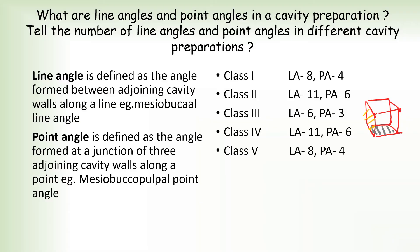What are line angles and point angles in a cavity preparation? A line angle is defined as an angle formed between two adjoining cavity walls along a line — for example, the mesiobuccal line angle. A point angle is defined as an angle formed at the junction of three adjoining cavity walls along a point, as shown where three walls meet in the diagram.